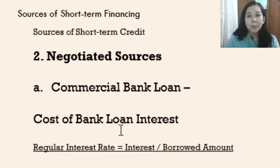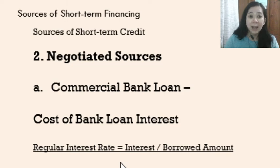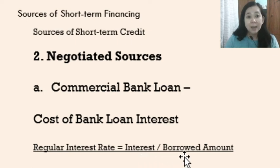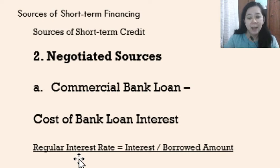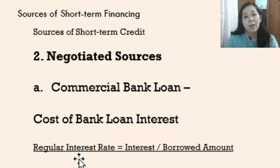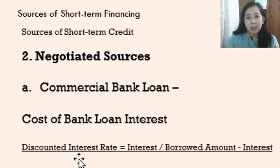Commercial bank loans normally have interest. The first type of interest is regular interest, computed by dividing the interest by the borrowed amount. This is the percentage of interest the borrower will pay along with the principal at maturity, or periodically as specified in the contract.